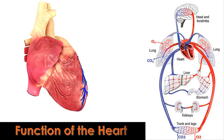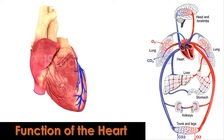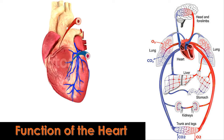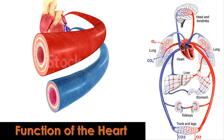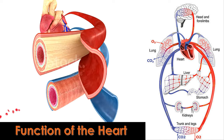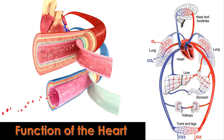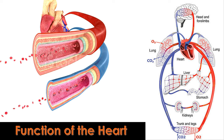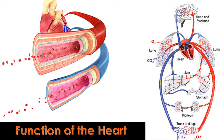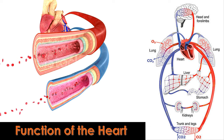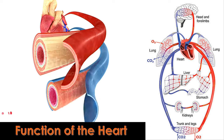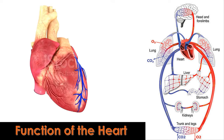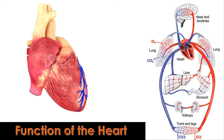The heart's main function is to pump blood throughout the body. The right side of the heart pumps deoxygenated blood from the body to the lungs, where it picks up oxygen and releases carbon dioxide. The left side of the heart pumps oxygenated blood from the lungs to the body, providing vital oxygen and nutrients to all the organs and tissues.